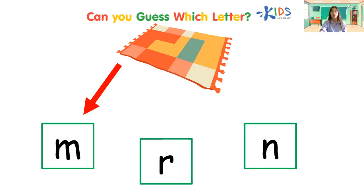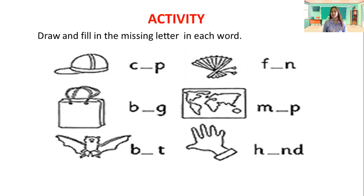Now, I want you to get your notebook, pencil, and crayon. It's time for you to do the next activity. Listen to the direction — you are going to draw and fill in the missing letter in each word. There are missing letters in each word, so we are going to write them. Fill in the missing letters. Do you understand, students? If you understand, you may start doing the activity now.